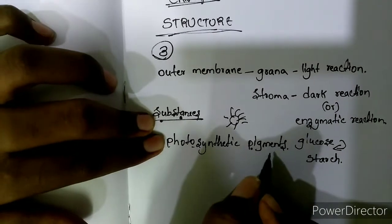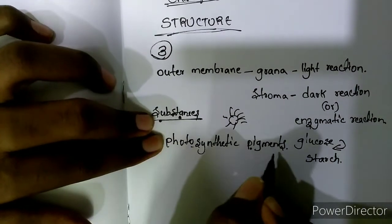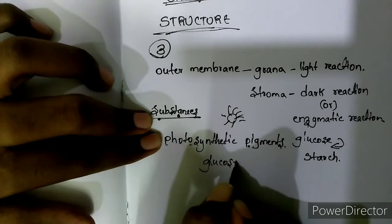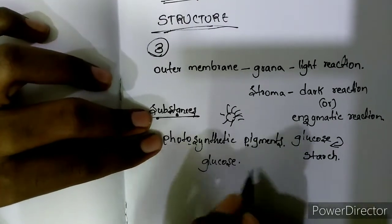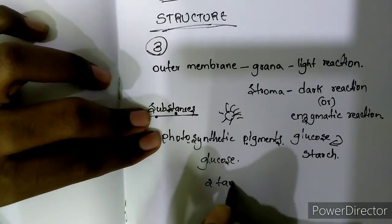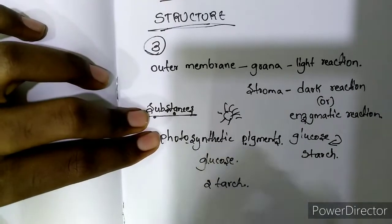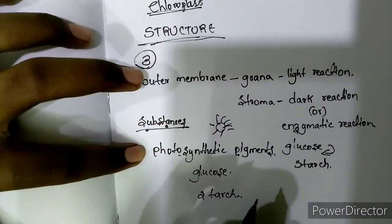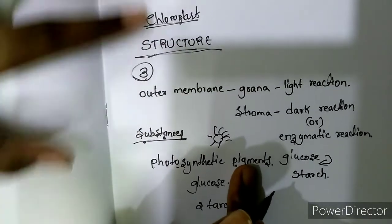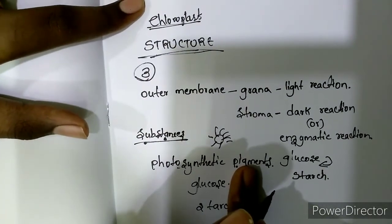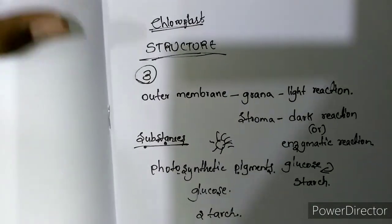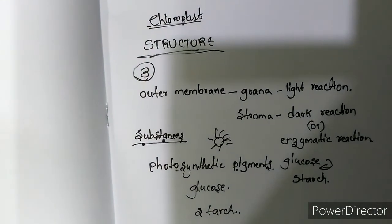Photosynthetic pigments play a key role in making food. With the help of photosynthetic pigments, glucose is produced, and the plants convert glucose into starch. We know that from starch food is produced, so indirectly these photosynthetic pigments and chloroplast play a key role in preparation of food.